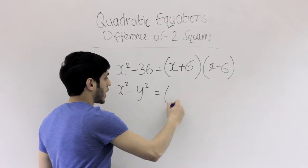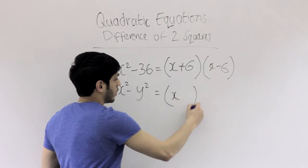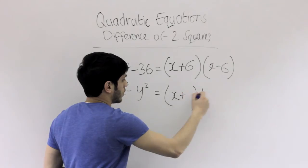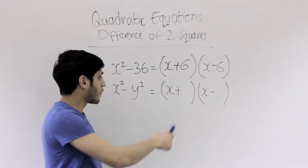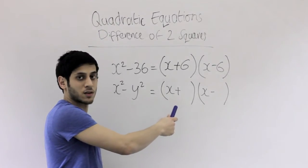For this example again, it would be x in your brackets, x plus and then x minus in another set of brackets. Now that we've got a form, x plus and x minus in a set of brackets, to find out what goes in there, we're just going to have to do the square root of y squared.